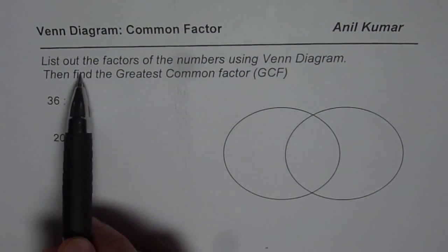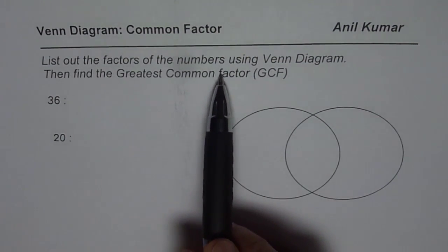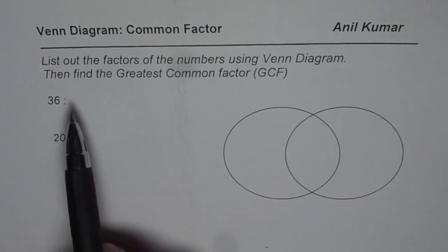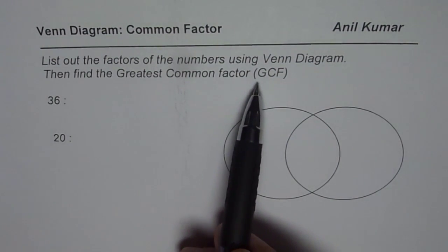The question is, list out the factors of the numbers using Venn diagram, then find the greatest common factor GCF.